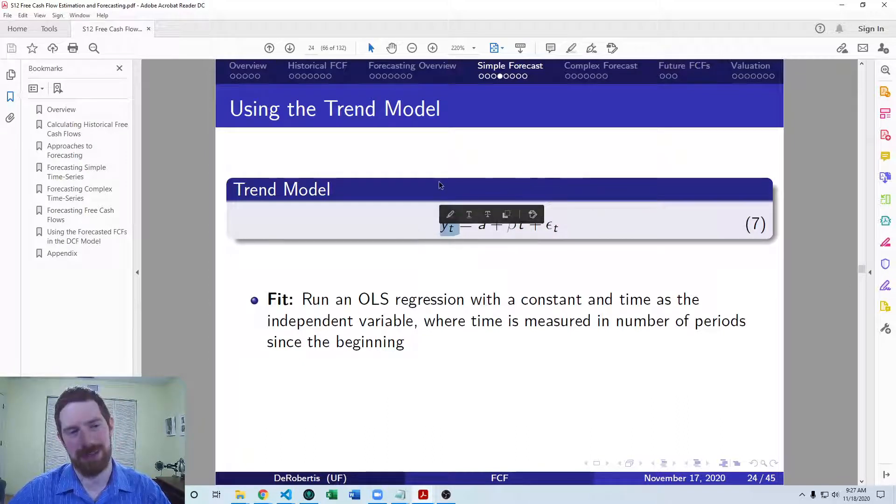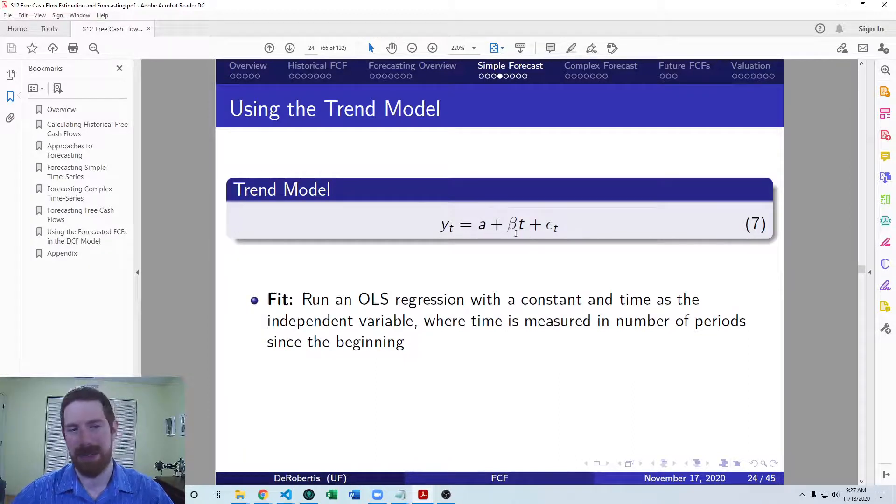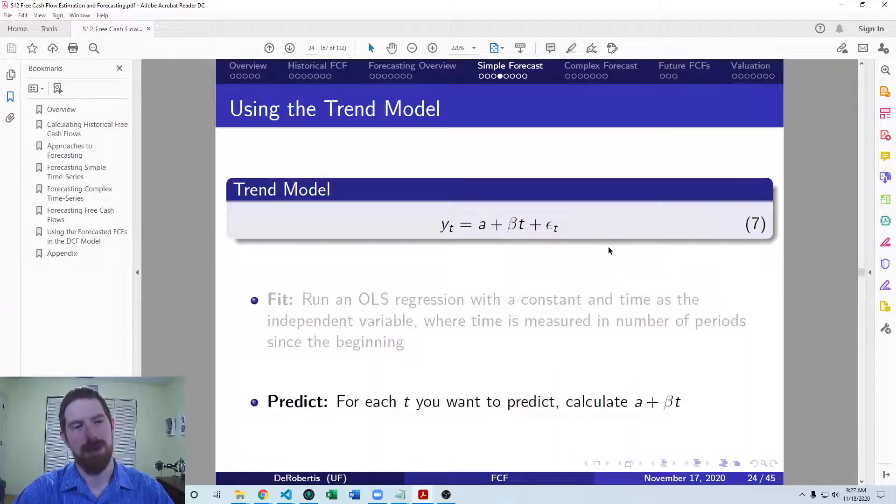On the left hand side, as your y or response or dependent variable, you're going to use whatever you're trying to forecast. So you fit this regression, and that's going to get you this coefficient on the time variable, and that's what we need to get out of this fitting process. Then in order to predict that into the future, we calculate the fitted model by using that coefficient that we calculated from the historical, multiplying it by the time period, and adding the constant which was estimated.